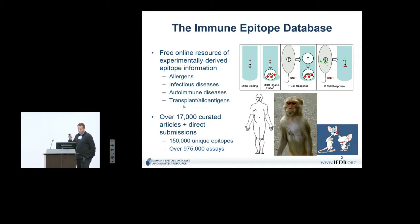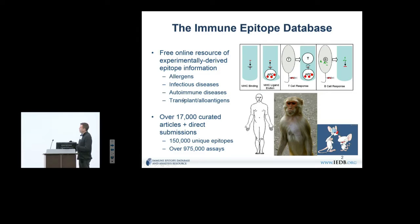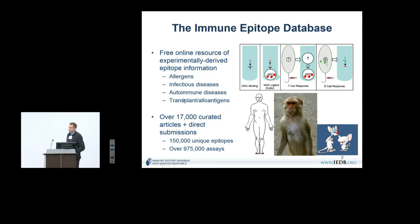Although there are plenty of people who would like cancer epitopes included, the IADB is still extremely useful for cancer epitopes because the tools we're developing analyze experimental data to derive generic rules that drive things like immunogenicity, and those rules can obviously be applied to cancer epitopes just as well.